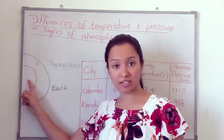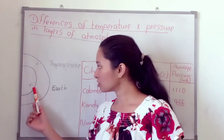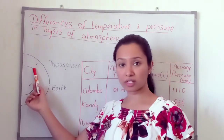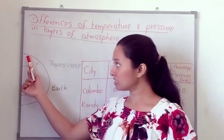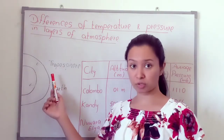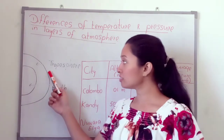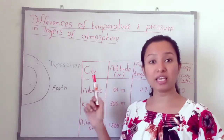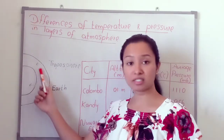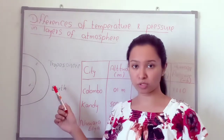This is our Earth. We live on the surface of the Earth. This is the first layer of the atmosphere — the troposphere. So we live in the troposphere, the first layer of the atmosphere.